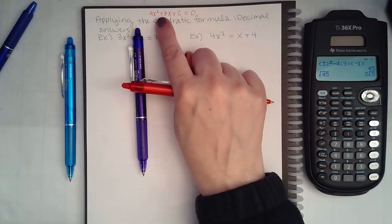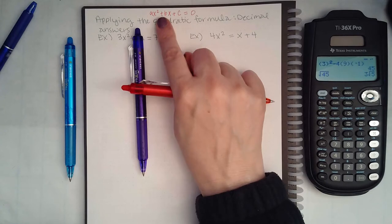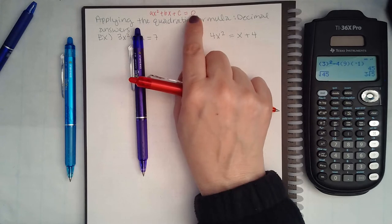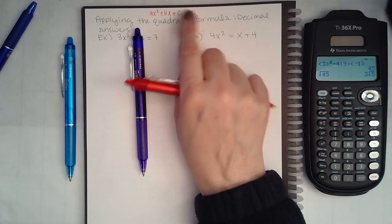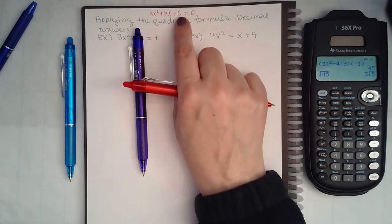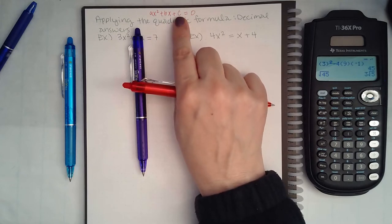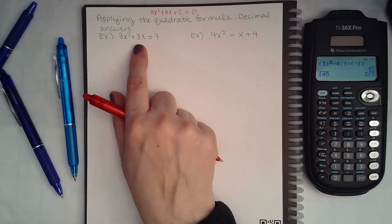What's important is that all three of your terms are on the left hand side and there is nothing on the right hand side. What's also important is that it is in descending order starting with your squared term, then your x term, then finally your constant.